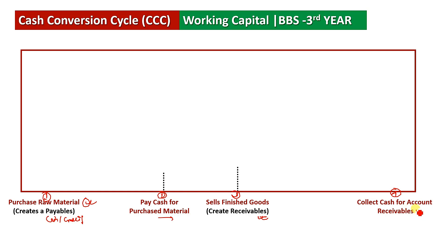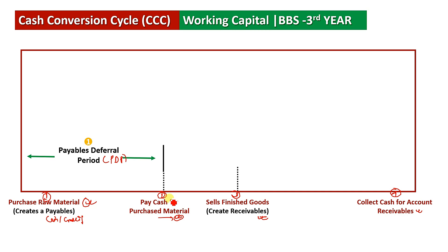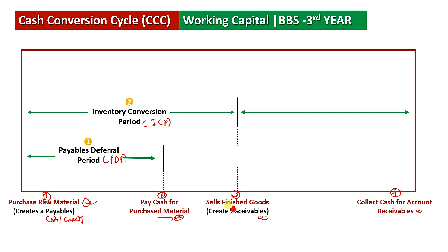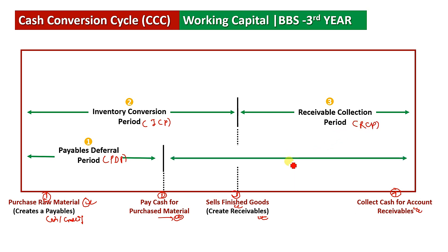Let's explain the numbers. In the beginning, there are key points. Number 1 is the Payable Deferral Period. Number 2 is the Inventory Conversion Period. Number 3 is the Receivable Collection Period. And the 4th important point is the cash conversion cycle.